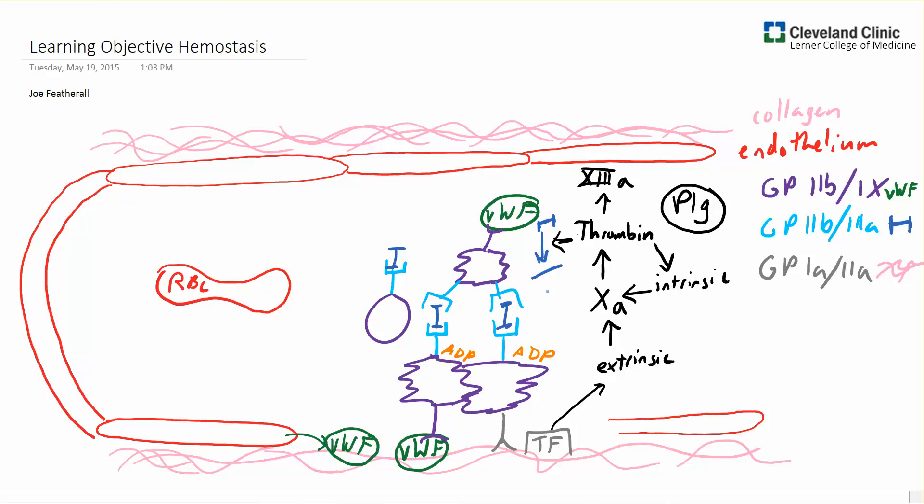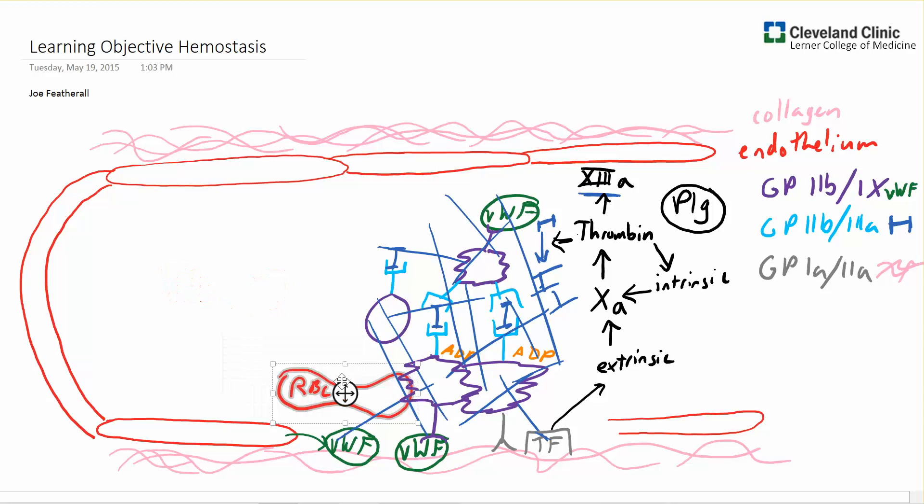Fibrin can then be cross-linked by 13. Activated factor 13 starts cross-linking our fibrin and we end up with a network of fibrin that ties all of these proteins and platelets together. We also get our red blood cells into the aggregate and we get a very solid hemostatic clot.